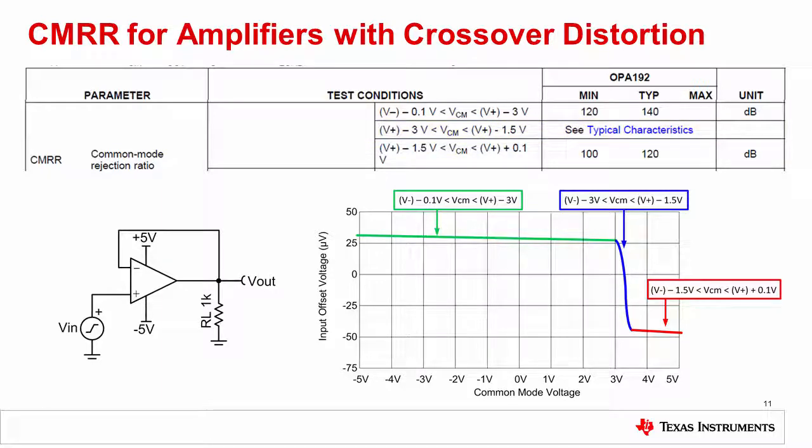The blue region is where the device transitions from the PMOS input pair to the NMOS input pair. In this region, the CMRR is poor and unpredictable, so the datasheet directs you towards characteristic curves similar to the VOS versus VCM plot given here.